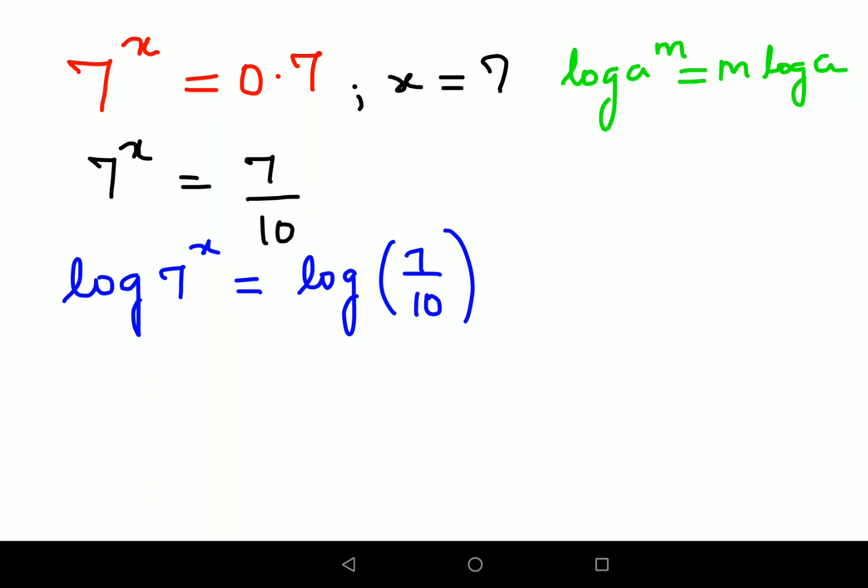So here I'll write this as x log 7, and log of a upon b can be written as log a minus log b. So here I can write this as log 7 minus log 10.